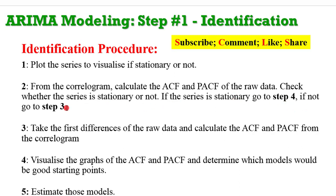Step four: if the series is stationary, determine the model to estimate, then go to step five to estimate the model. Step three: if the series is not stationary, take the first difference of the raw data, plot the correlogram, calculate the PACF and ACF, then determine the model and proceed to estimate it.